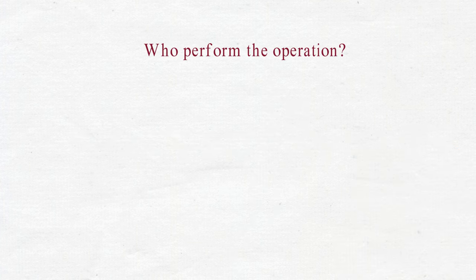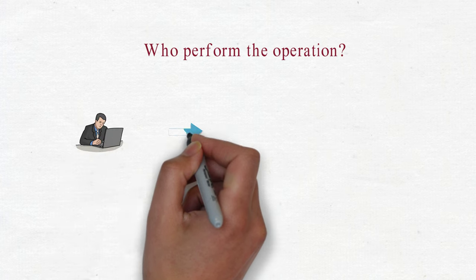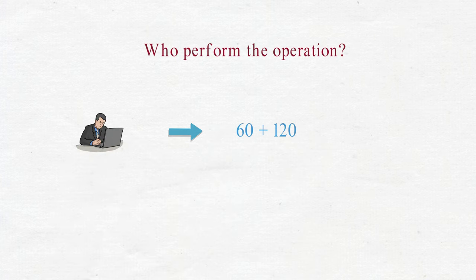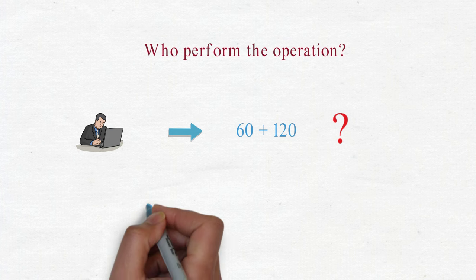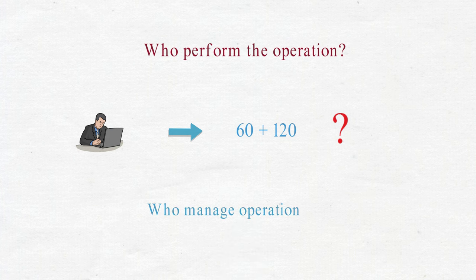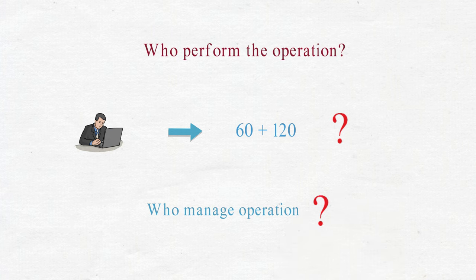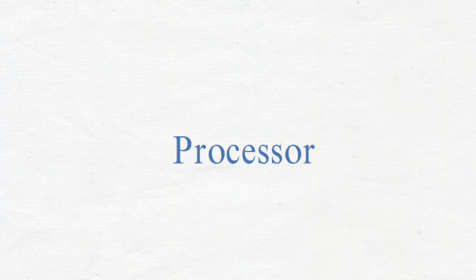Who performs the operation? When a user enters 60 plus 120, who calculates the result? Who manages which operation is to be performed in the computer? It's a processor. Let's discuss.